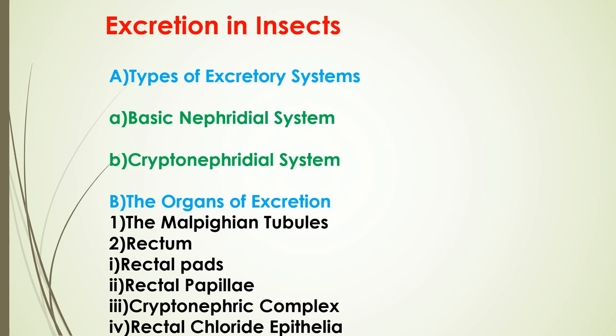Regarding types of excretion systems: on the basis of their anatomical association, these Malpighian tubules are long, slender, convoluted tubes whose proximal end opens at the junction of hindgut and midgut, while the distal end remains blind.